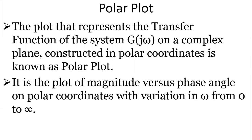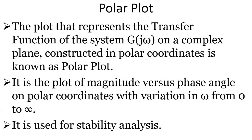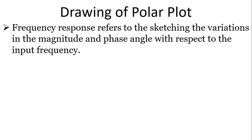A polar plot is a plot of magnitude versus phase angle on polar coordinates with variation in omega from 0 to infinity. When the angular frequency varies from 0 to infinity, we plot magnitude versus phase angle on polar coordinates. This polar plot is used for understanding the stability of control systems. To draw a polar plot, we need to understand that frequency response refers to the variations in magnitude and phase angle with respect to the input frequency.